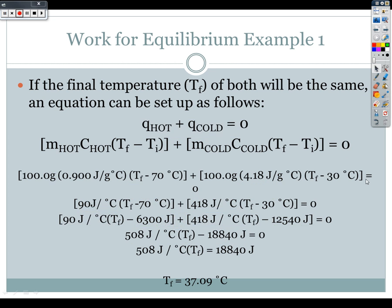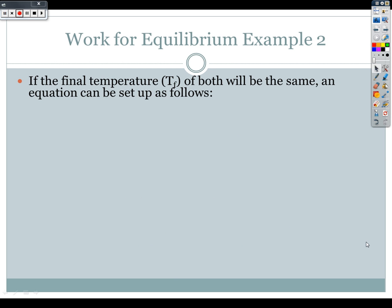So the other method, I just need to clear that. The other method says that if T_f is going to be equal, is the same on both sides, then I can set negative Q hot equal to Q cold.